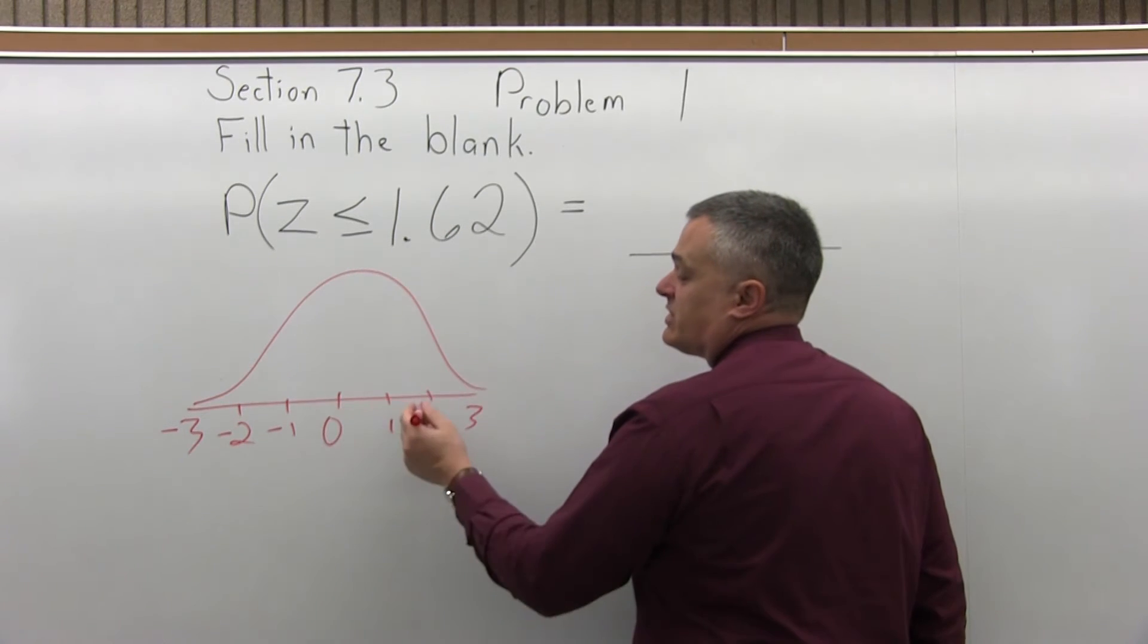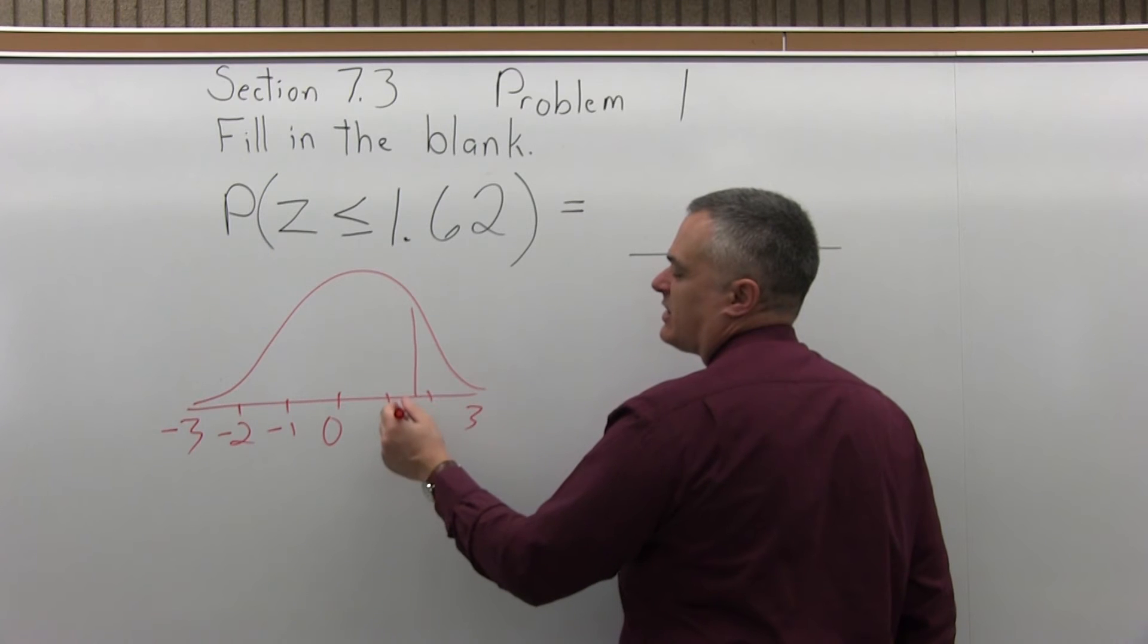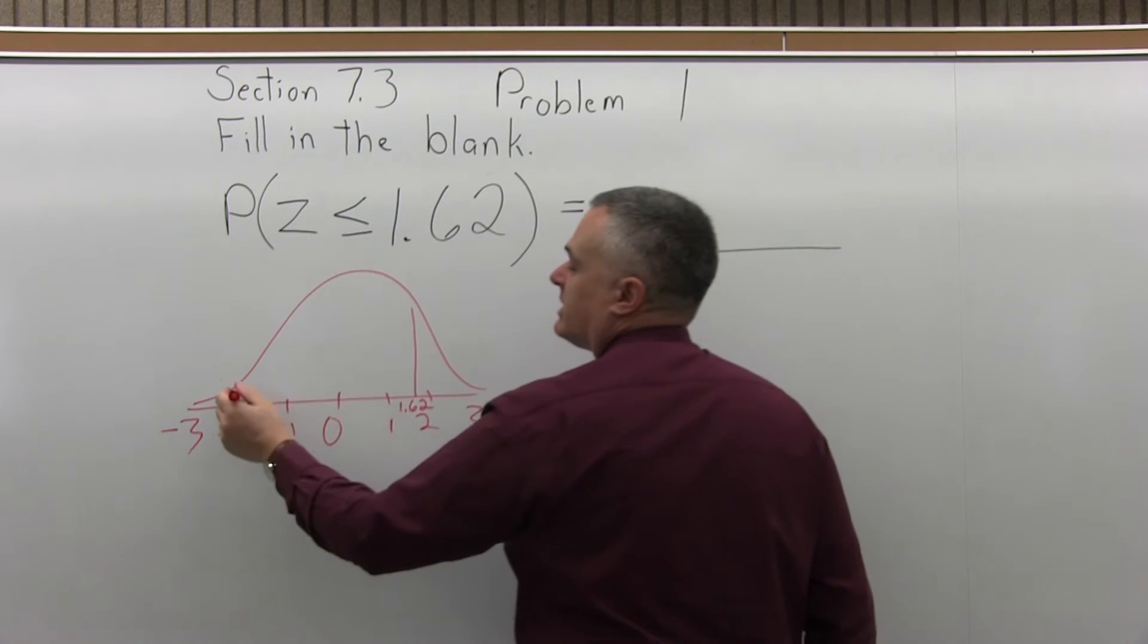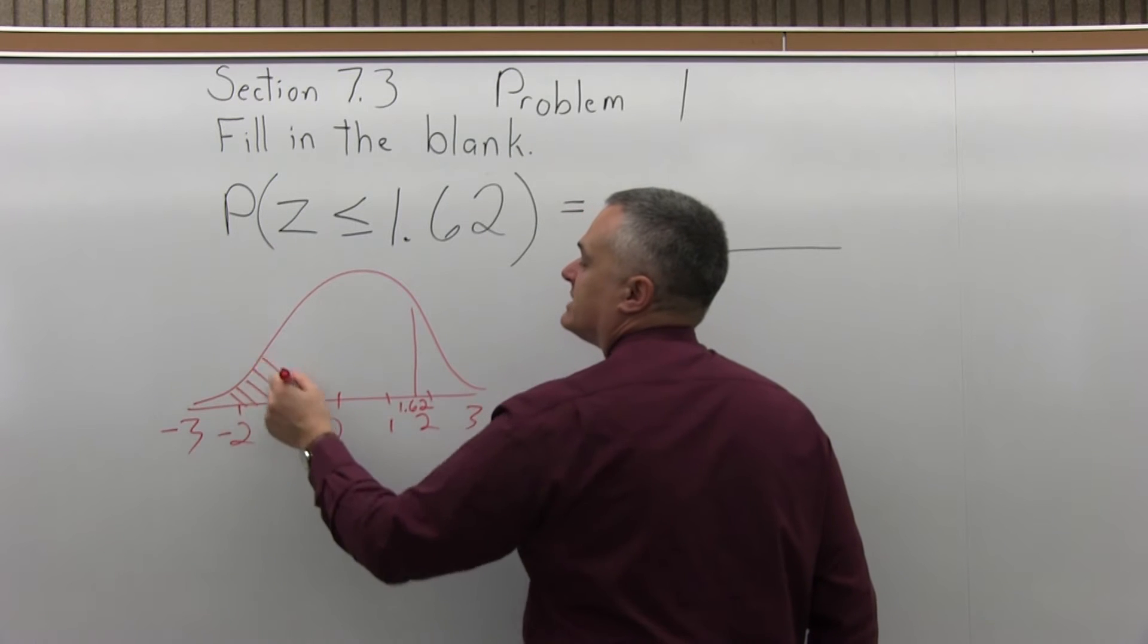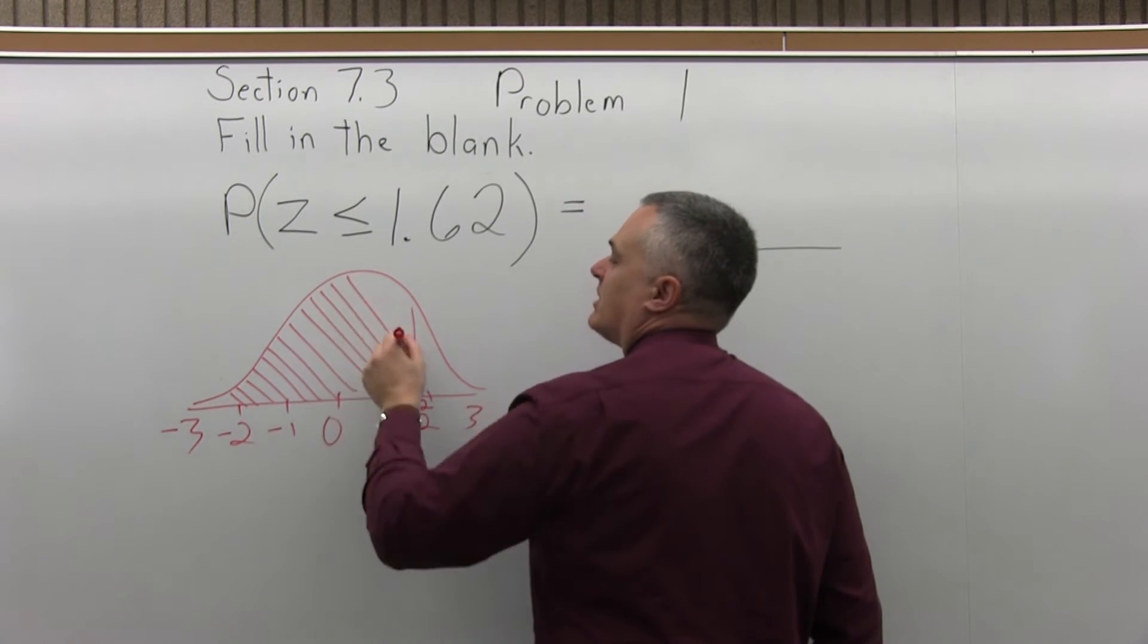So 1.62 is one of the numbers along the bottom. By eye, it's a little past the 1.5, so 1.62. And we want the probability of being less than 1.62. So that would be the area to the left of 1.62 on my graph.